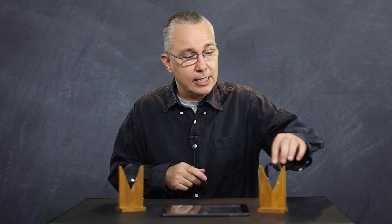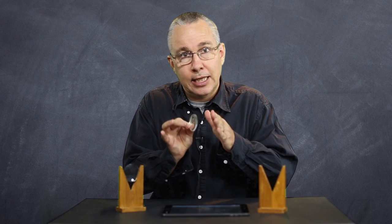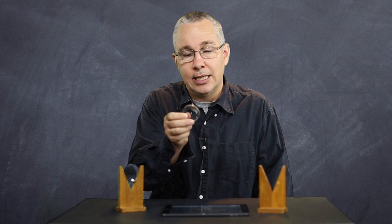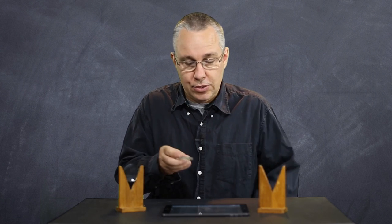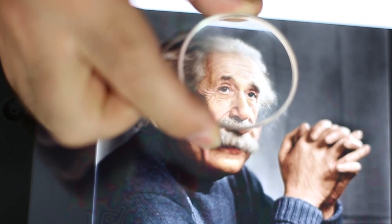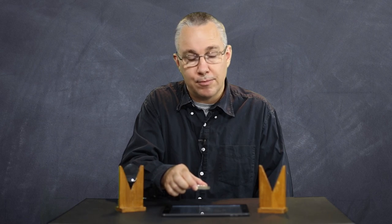Now if I do the same thing with a concave lens — which looks a little different — the convex lens is thicker in the center and thinner at the edges, whereas the concave lens is the opposite: thinner in the center and thicker at the edges. As I move this one around you can see the effect is different. Rather than enlarging the image, the image gets smaller, and the size of the virtual image varies depending on how far I am from my subject.